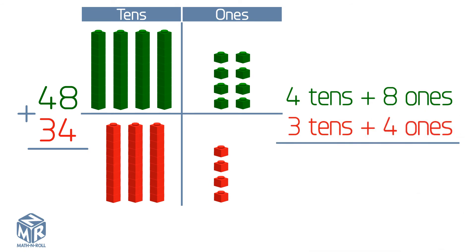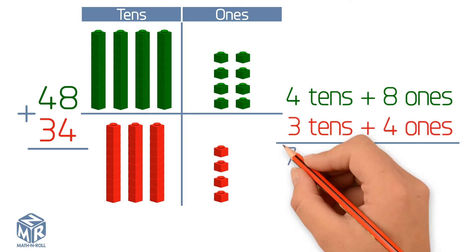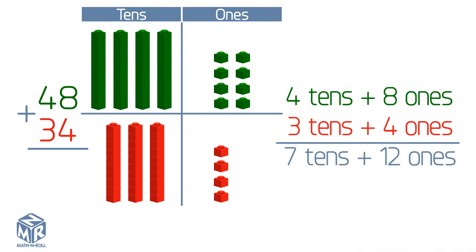Let's add them together. We get seven tens and 12 ones, or 70 plus 12, which equals 82. So 48 plus 34 equals 82.